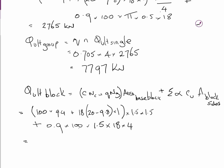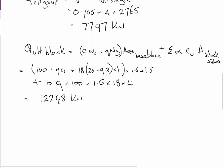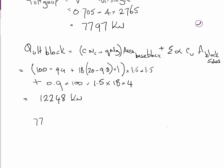Go through and calculate that out, equals 12248 kilonewtons, ultimate bearing capacity of the block. And we can now see that Q ultimate group, 7797 kilonewtons, is less than 12248 kilonewtons. Therefore, the lower one means it will fail in group mode.